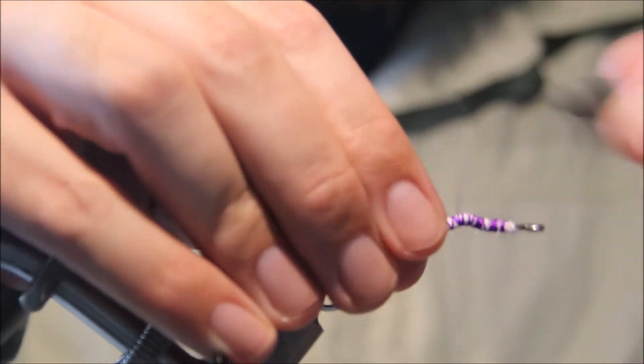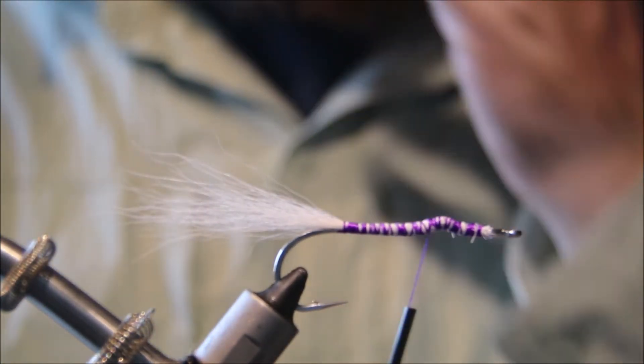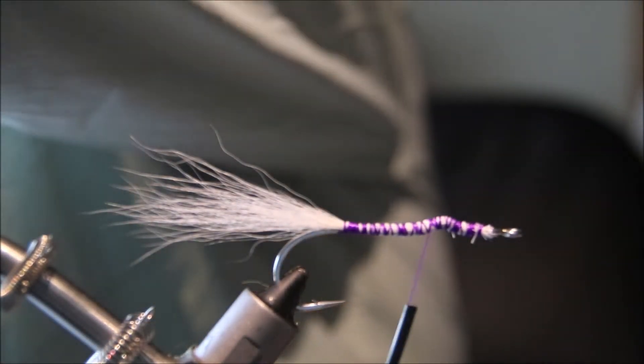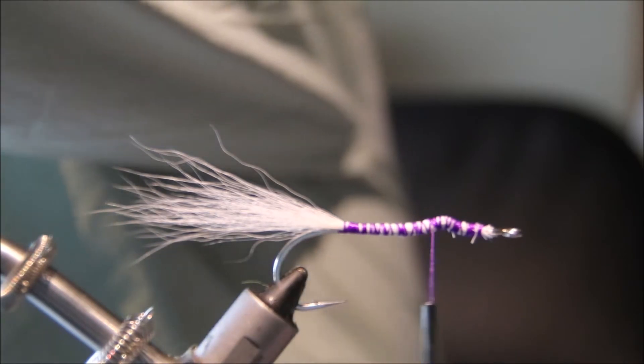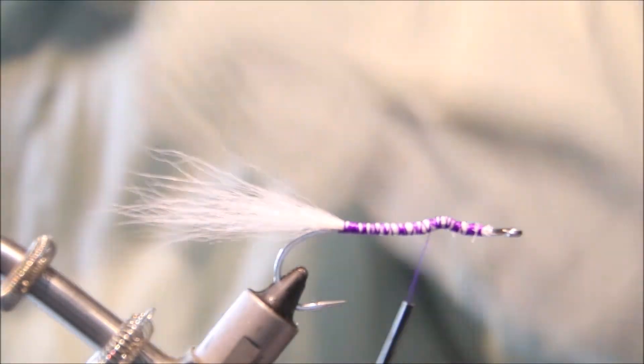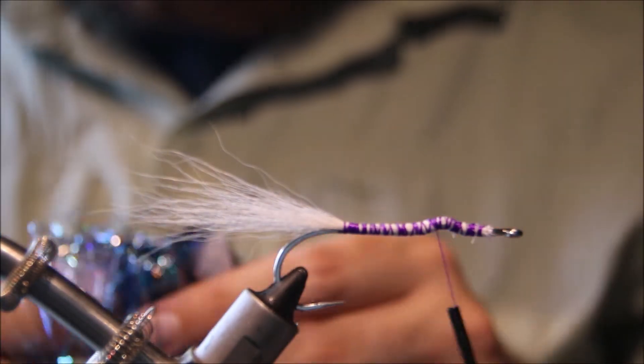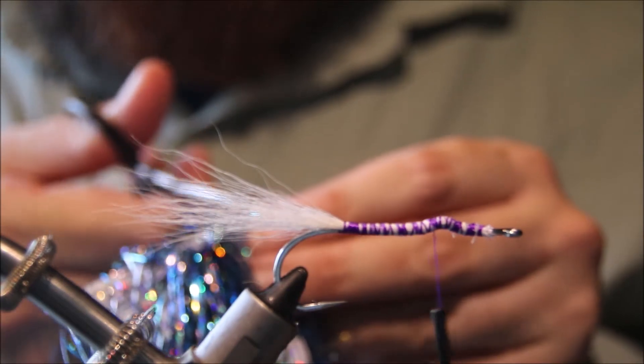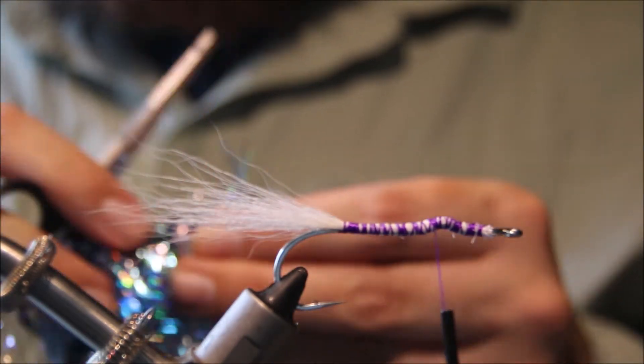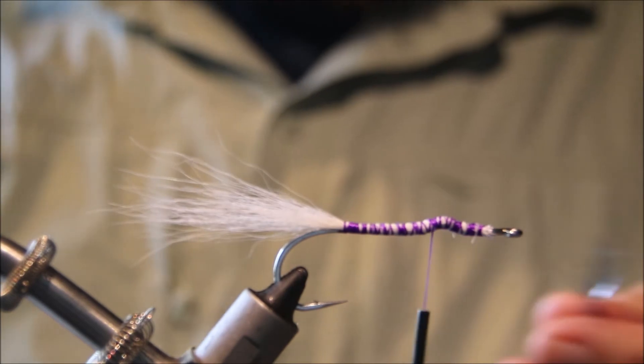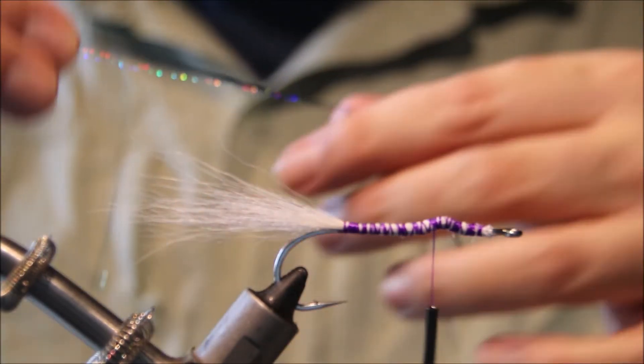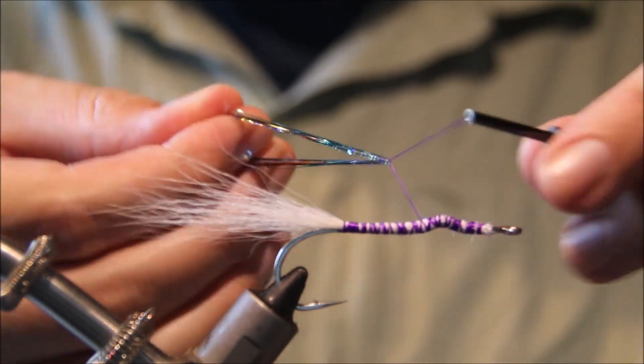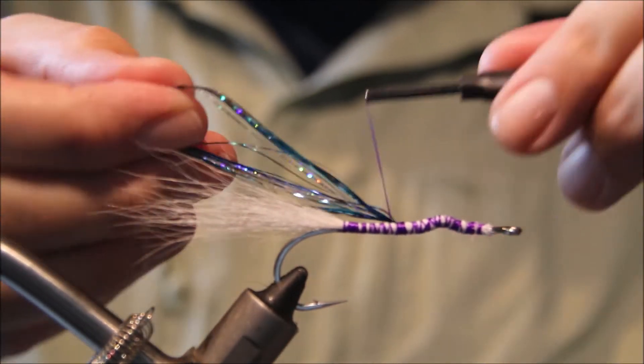A bit of flash. This is Sibai tinsel here, nice blue color, blue and silver holographic mix. This is called Deep Space, really nice blend. A few fibers, and I always like to put plenty of flash in. You can remove it later, or you can cut it out if you feel that it's too flashy.